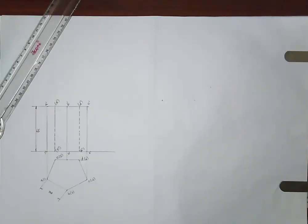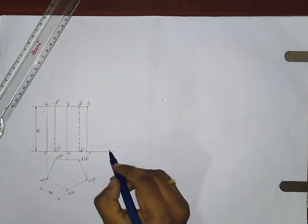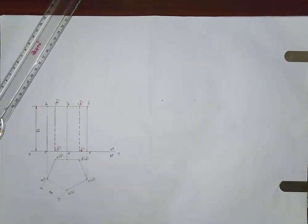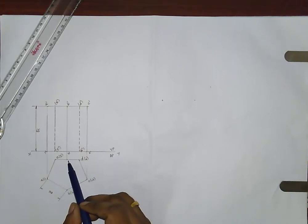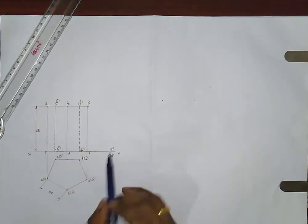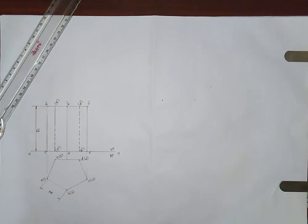Welcome to the second lecture on the development of surfaces. In this problem, a pentagonal prism of base side 30 mm and axis 65 mm is resting on HP such that one of its base edges is parallel to VP. Here is your VP, HP, and XY line. The base edge parallel to VP is drawn with 30 mm side and 65 mm axis. The simple position has been drawn.